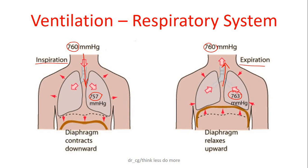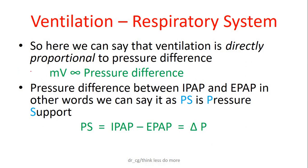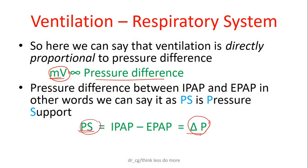So from this, we can say ventilation is directly proportional to the pressure difference — what we call in medical terminology pressure support. So MV (minute ventilation) is directly proportional to PS (pressure support), or delta P, which is the difference between your IPAP and EPAP.